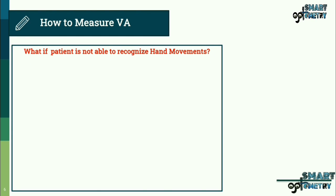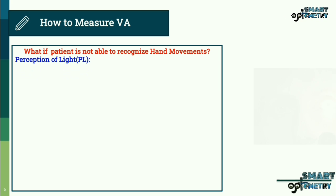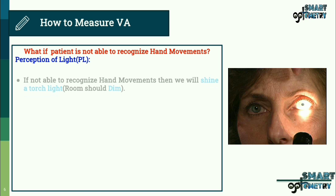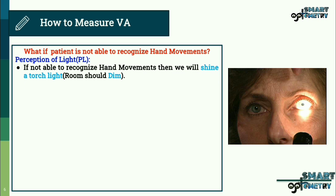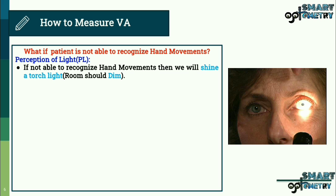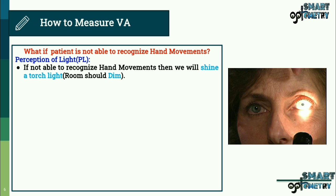If the patient is not able to recognize hand movements, the next step is to check perception of light. We shine a torch light, but the room illumination should be dim for this test. Although the prerequisite states daylight condition, at this level of vision we need to determine whether perception of light is present, so the room must be in dim light condition.